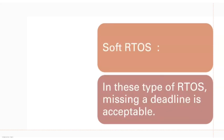For soft real-time operating systems, just as the name indicates, if the deadline is missed the result is still acceptable. Even though the deadline is missed, there will be small changes or small degradation in performance, but the result is acceptable. In the other two cases the result is not acceptable — in the hard case it is very dangerous, in the firm case it produces undesired effects. These are the three classifications of RTOS.